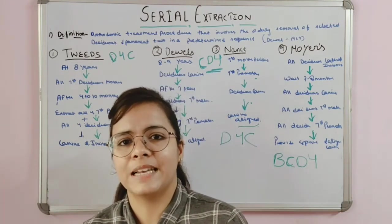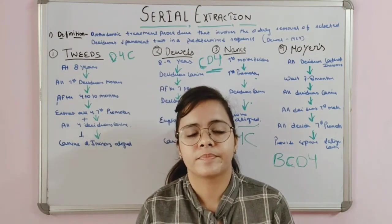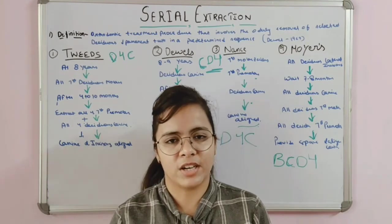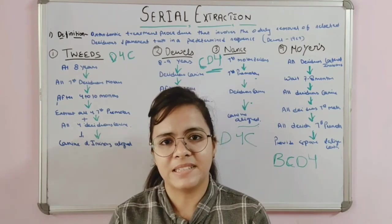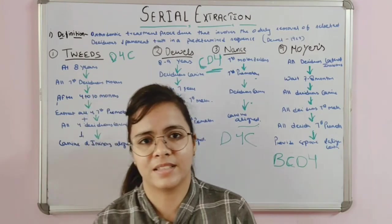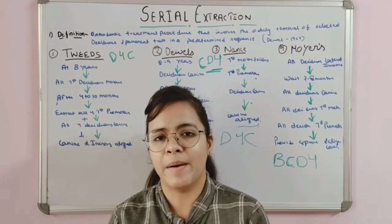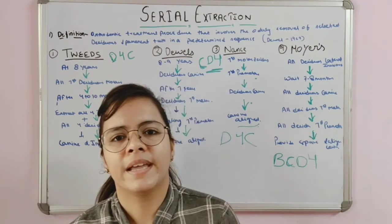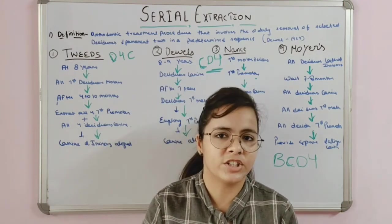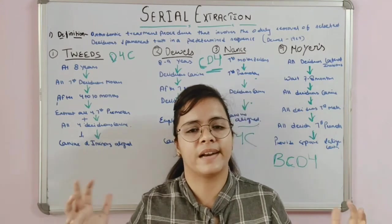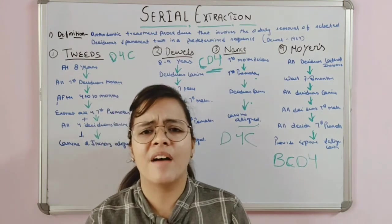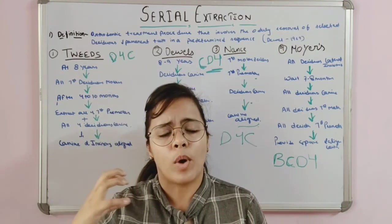The fourth limitation relates to nasal structure development. While most facial structures complete growth earlier, nasal structure growth may not be complete at the time serial extractions are performed, and the nasal growth may be hampered in certain cases. All these factors must be kept in mind when planning serial extraction cases.